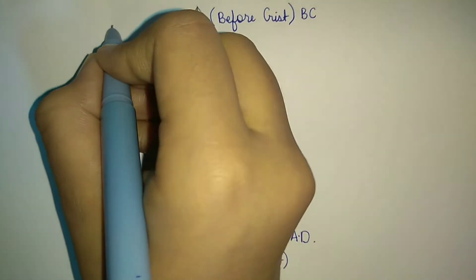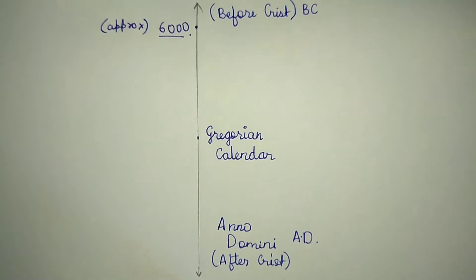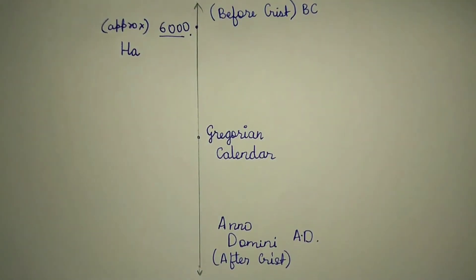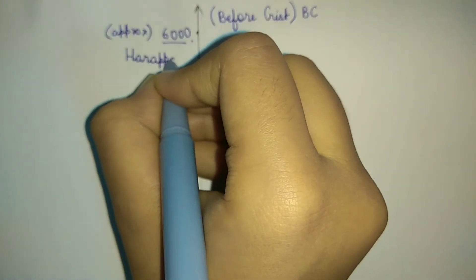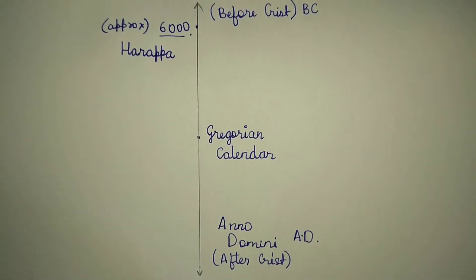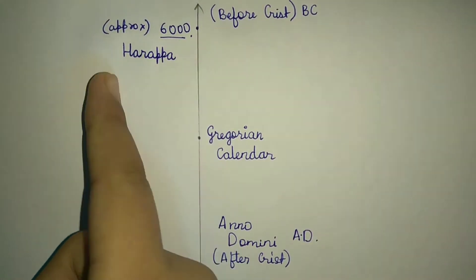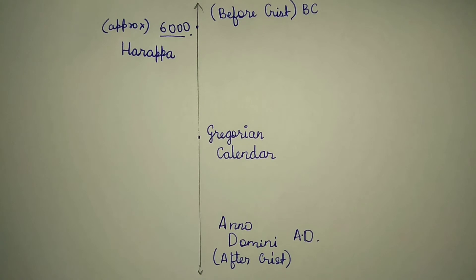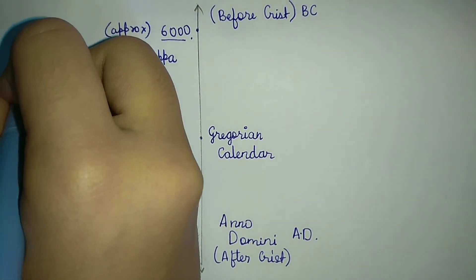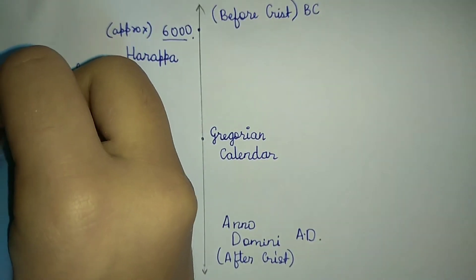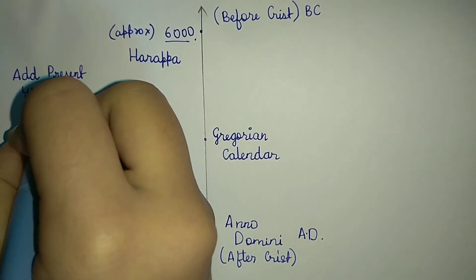Let me take some examples for better understanding. We'll use Harappa, which emerged in 6000 BC approximately. To find how many years ago this happened, we add the present year to the BC year: 6000 + 2021 = 8021. So the Harappa civilization happened 8021 years ago.